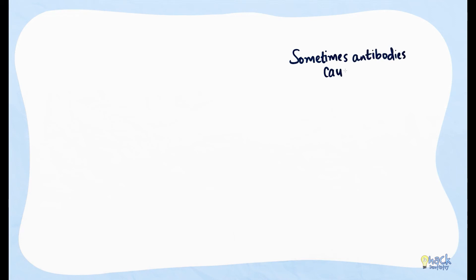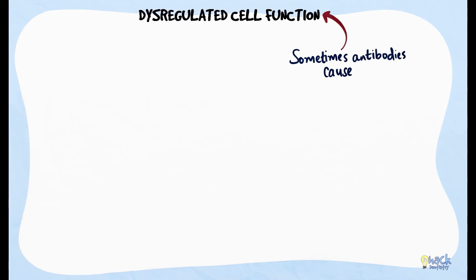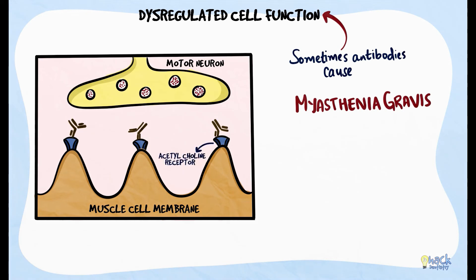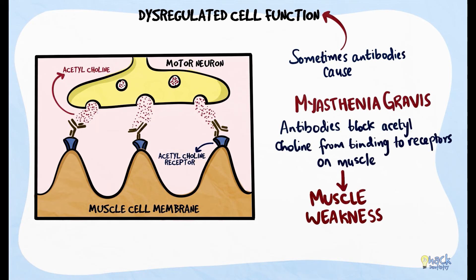Sometimes, rather than causing cell damage, antibodies could cause dysregulated cell function. A particular example is the disease myasthenia gravis, where antibodies specific to acetylcholine receptors in the muscles bind and inhibit the receptors from binding with the neurotransmitter acetylcholine, resulting in muscle weakness.